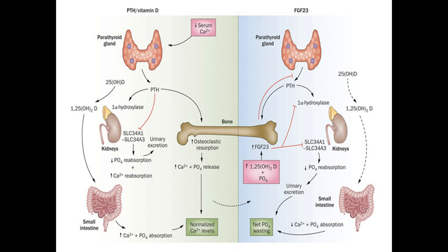There is a channel also known for calcitriol. It has to be sensitive to calcium. Parathyroid hormone stimulates 1-alpha hydroxylase in the kidney, which stimulates active vitamin D. Active vitamin D then stimulates calcium absorption in the small intestine.